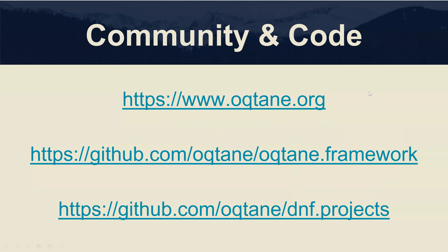Before I do that, I just want to mention a few important links. Octane.org is the home site for the Octane community. The Octane source code is on GitHub in the repo octane/octane-framework. In each of the workshops in this series, I'm focusing on an example module called dnf.projects, and the full source code for that module is also available on GitHub.